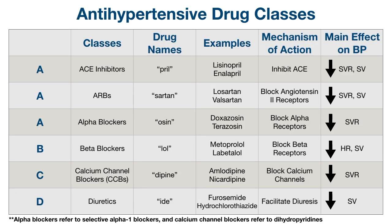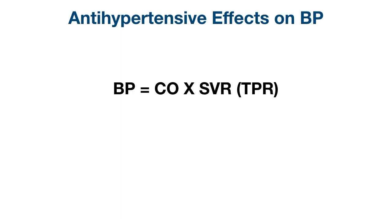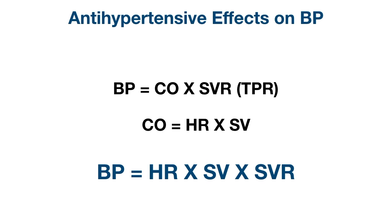Now that we understand the mechanism of action of each antihypertensive class, we can figure out the main effects they'll have on blood pressure. Remember, blood pressure equals cardiac output times systemic vascular resistance, also known as total peripheral resistance. Cardiac output equals heart rate times stroke volume — so blood pressure equals heart rate times stroke volume times systemic vascular resistance.